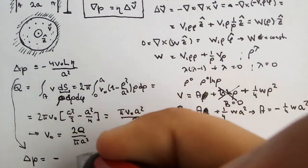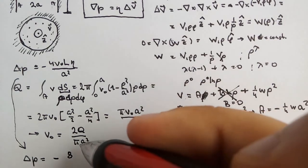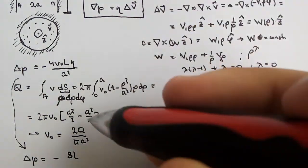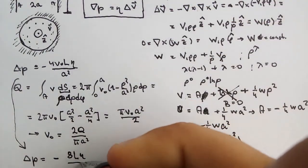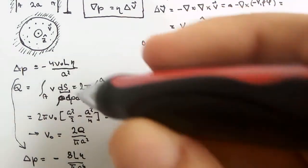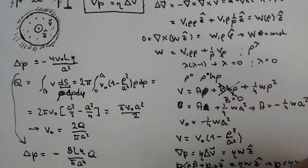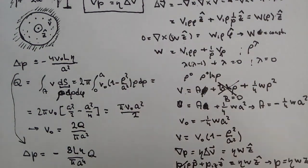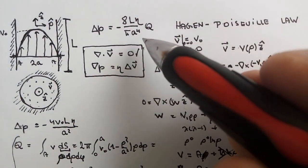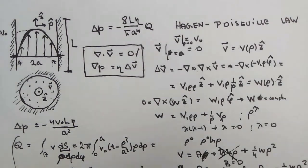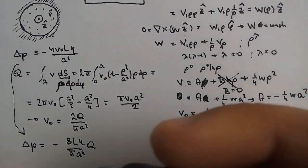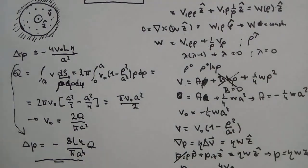From this result, V_0 = 2*Q/(pi*a²). Substituting into the pressure difference expression: delta_P = -8*eta*L*Q/(pi*a⁴). This is exactly the Hagen-Poiseuille law. That's it — I hope you enjoyed it and see you next time.